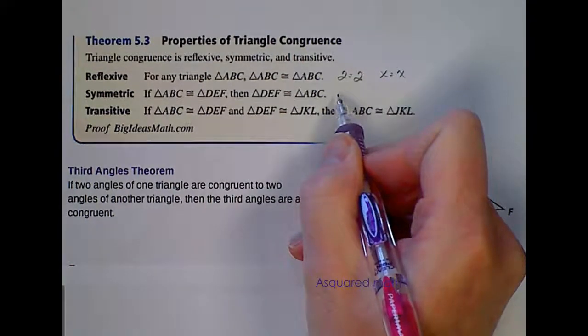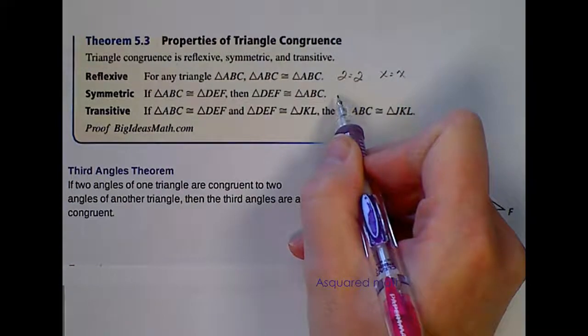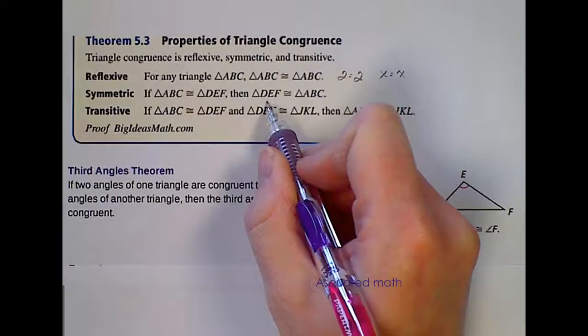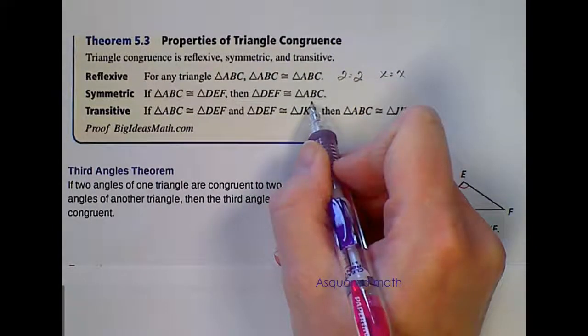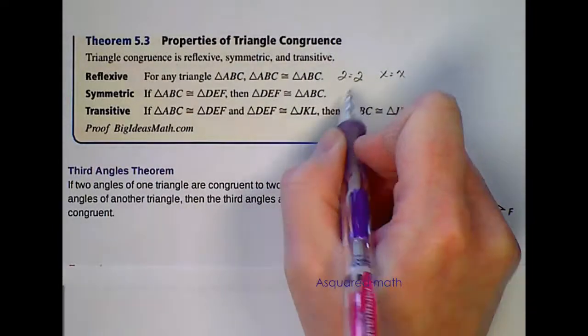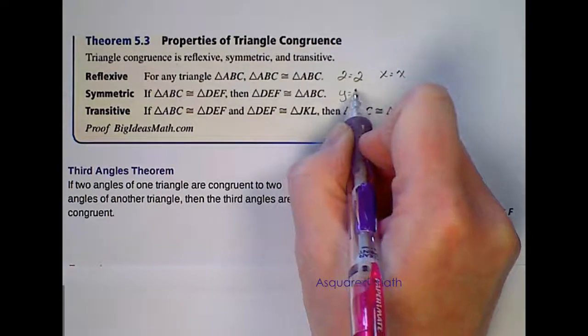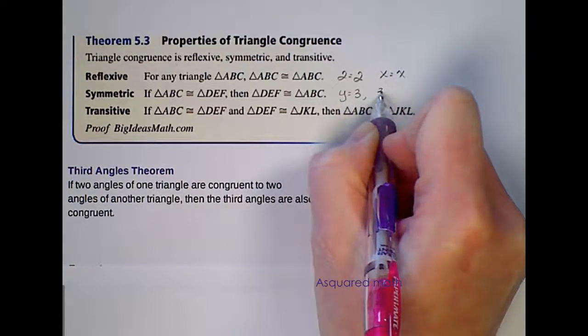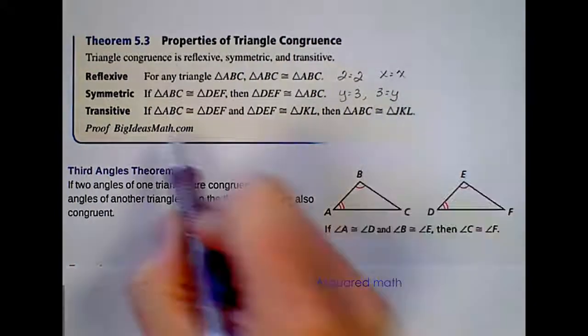You also learned about symmetric. If triangle ABC is congruent to triangle DEF, then triangle DEF is congruent to triangle ABC. In other words, if Y equals 3, then 3 equals Y.